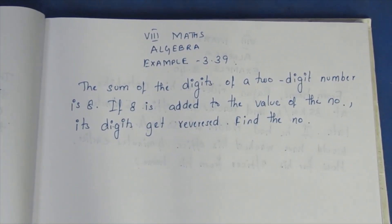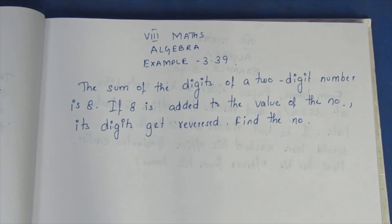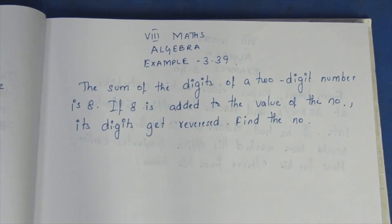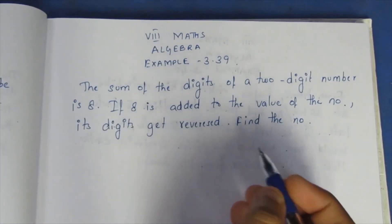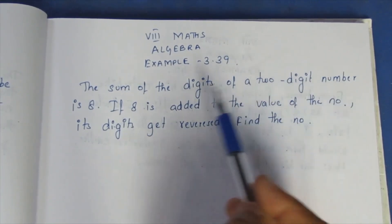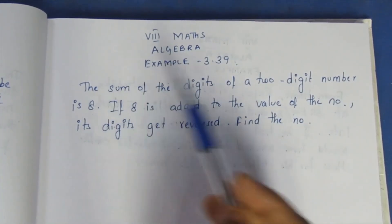The sum of the digits of a 2-digit number is 8. If 18 is added to the value of the number, its digits get reversed. Find the number. The sum of the 2-digit number is 8, so there are 2 digits. If we add the 2 digits, we get 8.